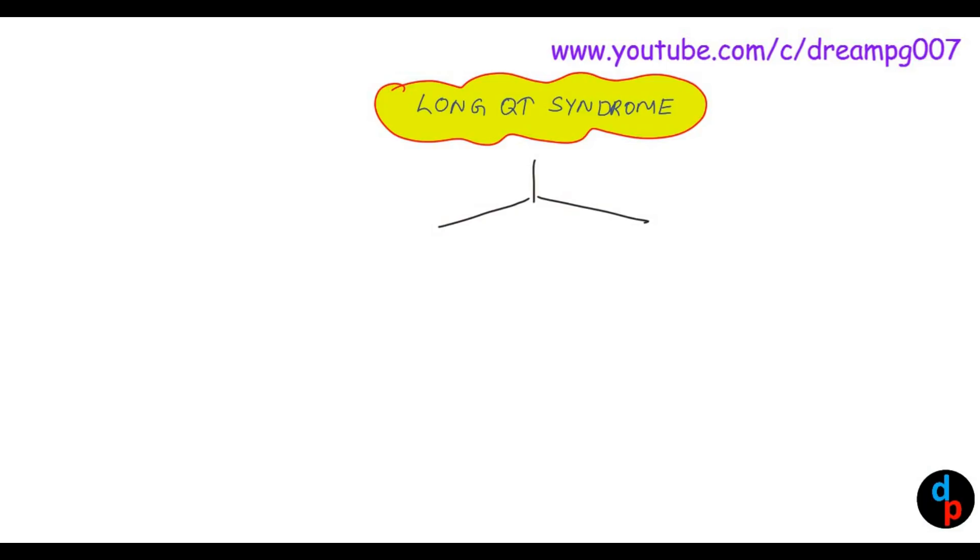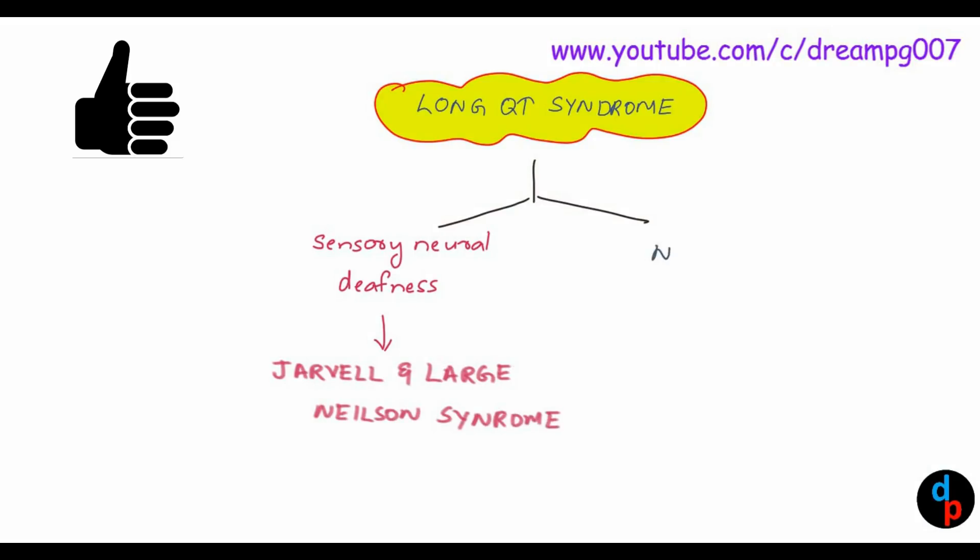We have two important syndromes associated with Long QT syndrome. If Long QT syndrome is presented with sensorineural deafness, it is called Jervell and Lange-Nielsen syndrome. Whereas if the hearing is normal with Long QT syndrome, it is called Romano-Ward syndrome.